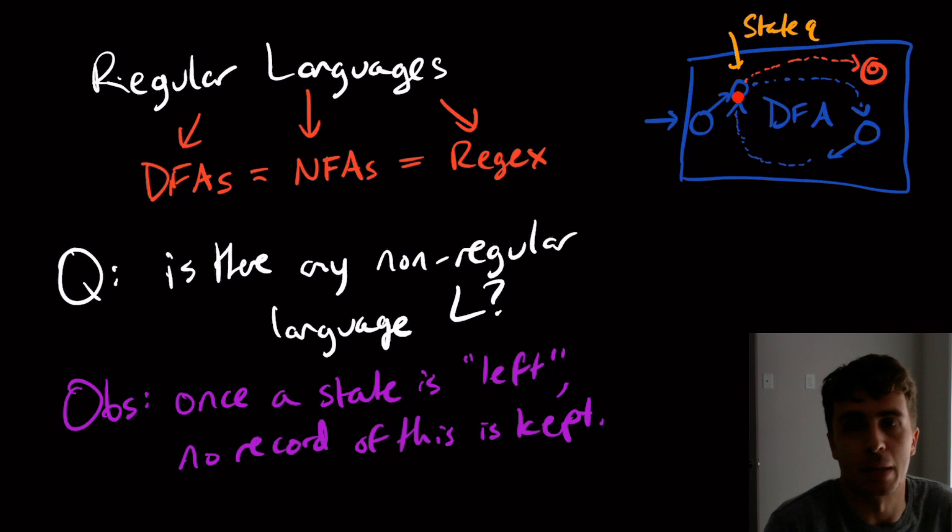If there is a record of that kept, then things might change. But there is no record of this kept. So the shorter string is accepted too.